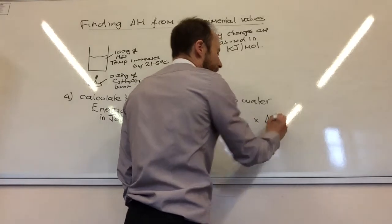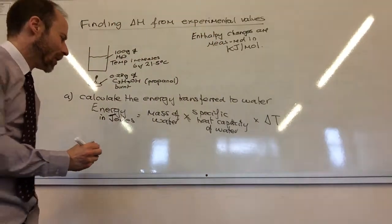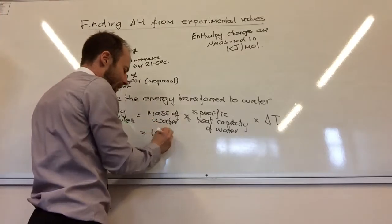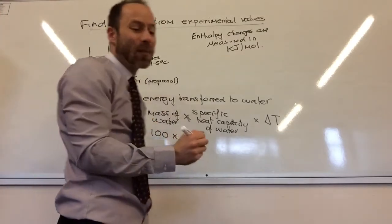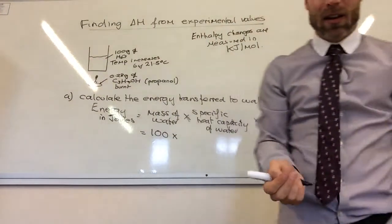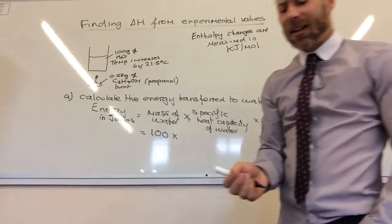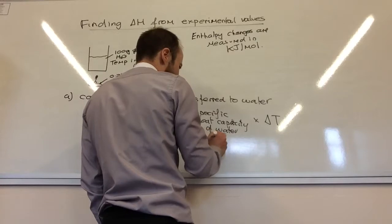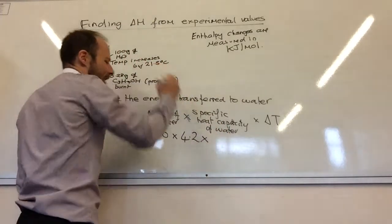times delta T, which is your temperature change. If I do that, my mass of water was 100 grams. The specific heat capacity, they always tell you this in a question, is actually 4.18. I'm just going to change that to 4.2.